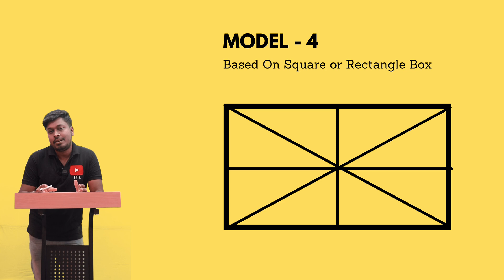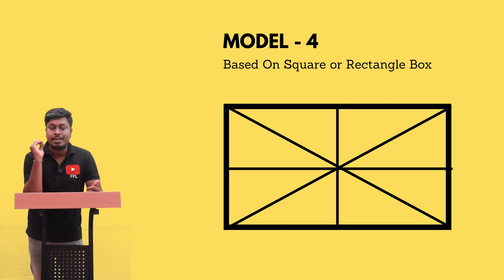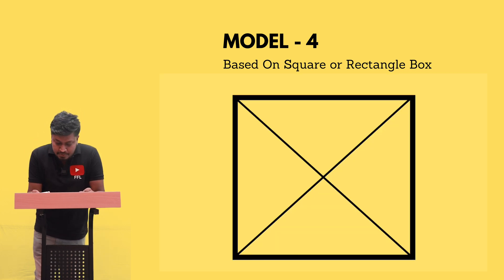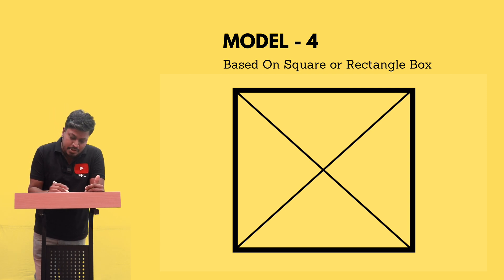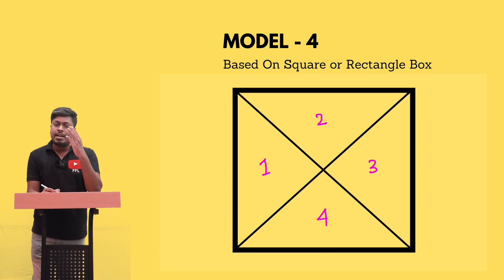Model number four diagrams look like either a rectangular box or a square box. For question one, our target is to find how many triangles are in the given figure. Using the normal method, we count basic triangles: this is one triangle, this is another, this is a third, and this is a fourth — so there are four small triangles.